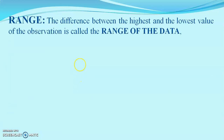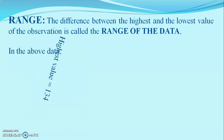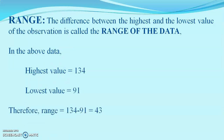What is meant by range? The difference between the highest and lowest value of the observations in an array of data is called the range. With the same example, the highest value was 134 and the lowest value was 91, and the difference between 134 and 91 is equal to 43. So 43 is the range of data in the given sample.